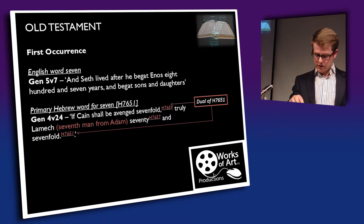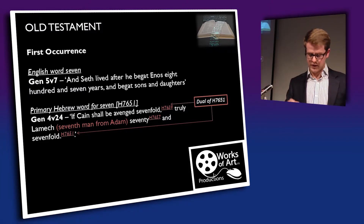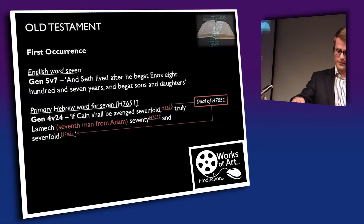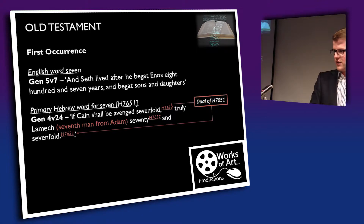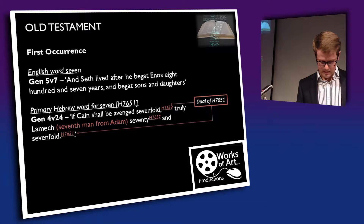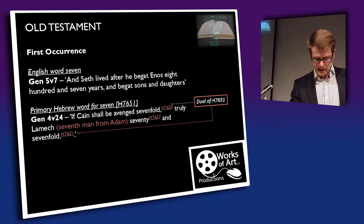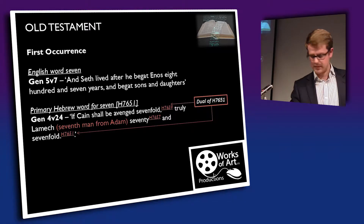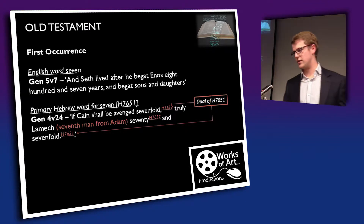This is an interesting pattern in scripture, because there is only one other time we really have this pattern of sevens — sevenfold and seventy and seven. Turn to Matthew 18, verse 21: 'Then came Peter to him and said, Lord, how oft shall my brother sin against me and I forgive him? Till seven times? And Jesus said, I say not unto thee, Until seven times, but until seventy and seven times.'